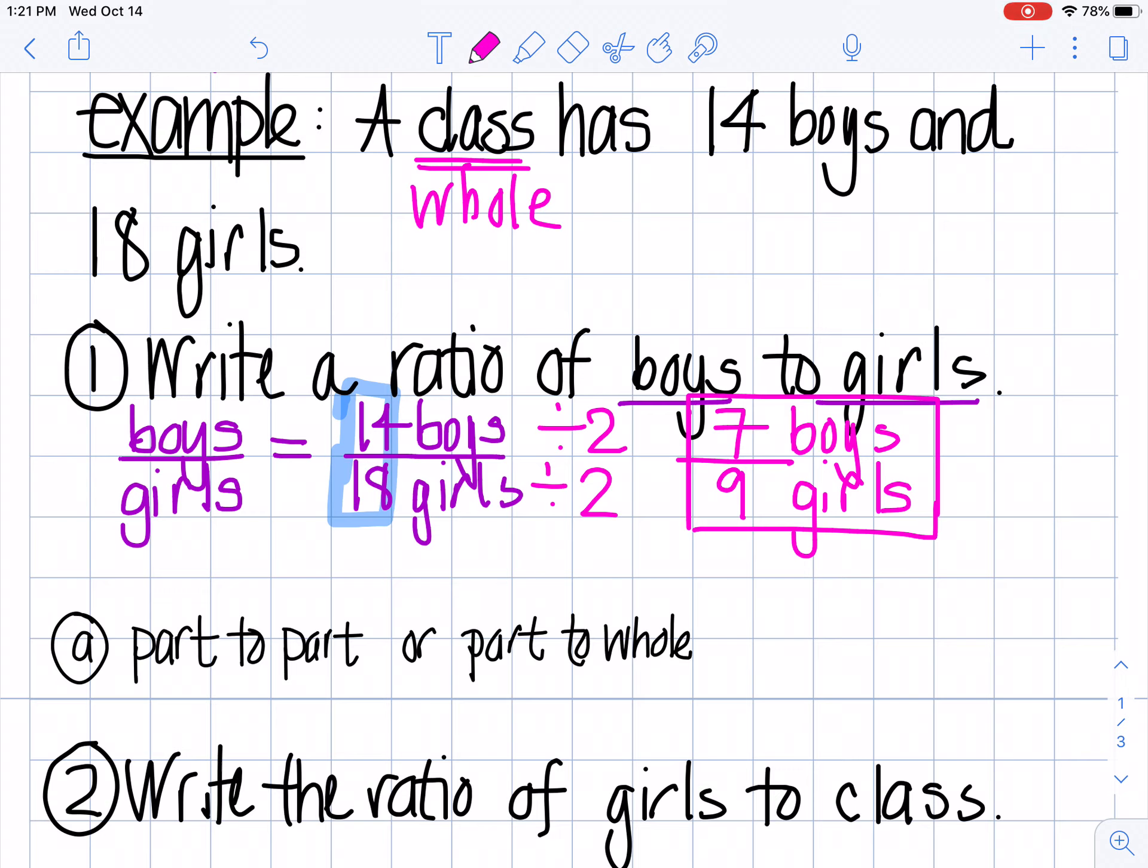In my class, I have boys and I have girls. So my class is made up of two parts, boys and girls. But the whole overall is the class. So because I'm comparing boys to girls, I can say this is a part-to-part ratio.